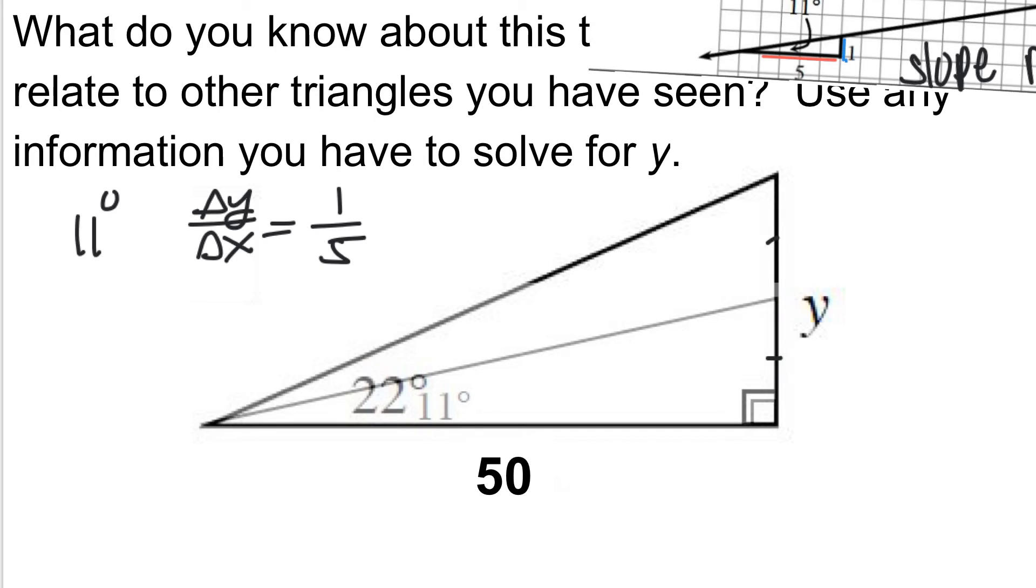What this means is that in this case, your change in Y is going to double. Again, this isn't a proof that we've gone over yet, but just letting you know this is how you figure it out. So for 22 degrees, if I went from 11 to 22, well then my slope ratio is also going to double.